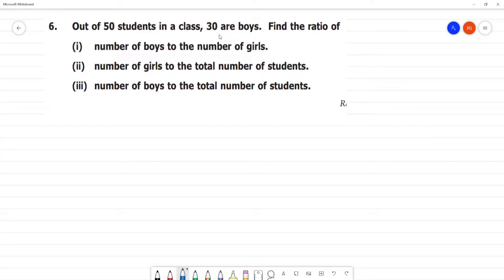Out of 50 students in a class, 30 are boys. Now, what are we going to say? Total students: 50. Boys: 30.